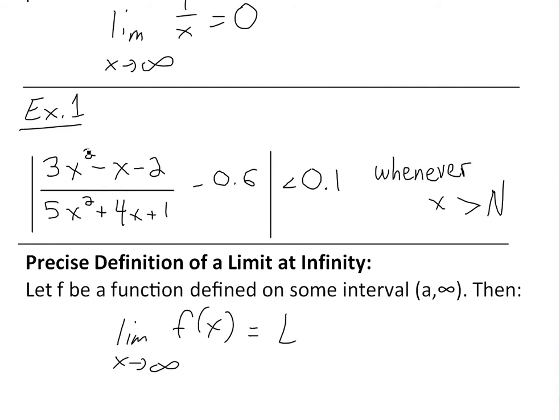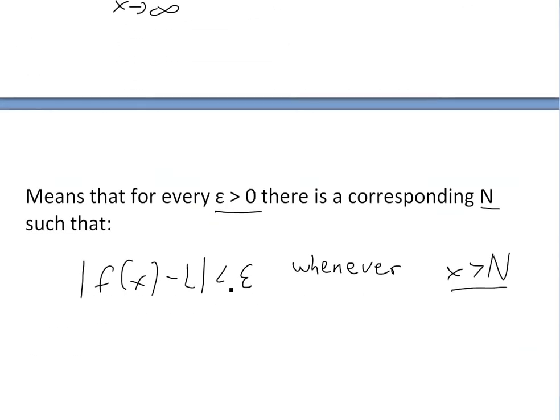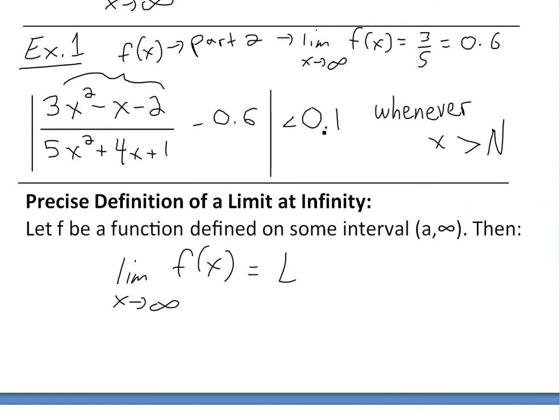I want to point out that this function, if we call this f(x), I went over in part two of my example series on limits at infinity. The limit as x approaches infinity of f(x), I already showed it to be 3/5 or 0.6. So 0.6 is the limit. If this is f(x), what we're doing is subtracting the limit and it's less than this delta, thus this value is our delta. And then we're just finding what N is.